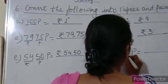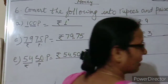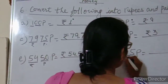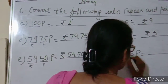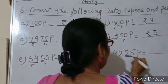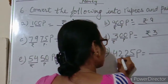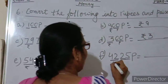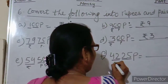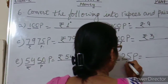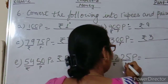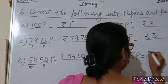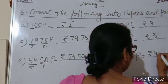Now the last one: 4,225 paise. Again, two digits from the right are paise, and the rest are rupees. So 42 rupees and 25 paise. We write 42 rupees, put a dot, then 25 paise.